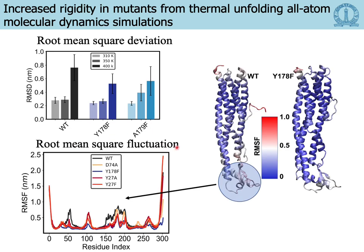We also look at the root mean square fluctuation across all residues of the protein, which is very revealing. For the wild type protein, the region of the beta tongue shows the largest fluctuations, and there is some fluctuation near the N-terminus where mutations were also carried out. The wild type tells us that in the absence of mutations there is greater flexibility — at 400 K we see the largest flexibility in the wild type. More importantly, the flexibility is significantly reduced for the mutants; all other mutants shown in color have far less fluctuation compared to the wild type.